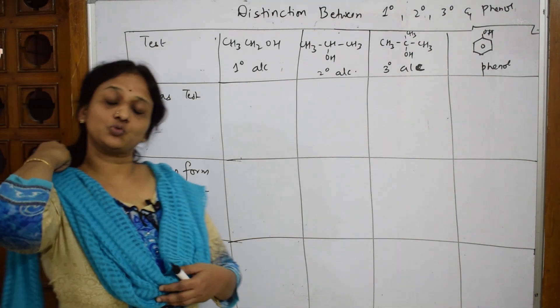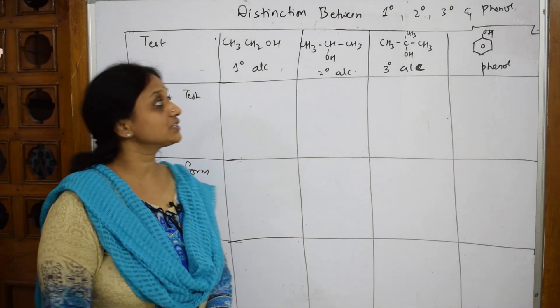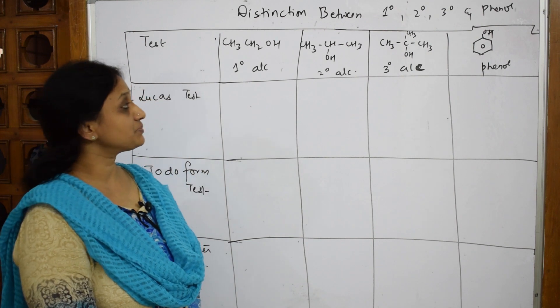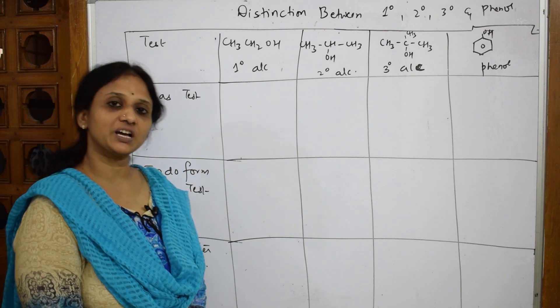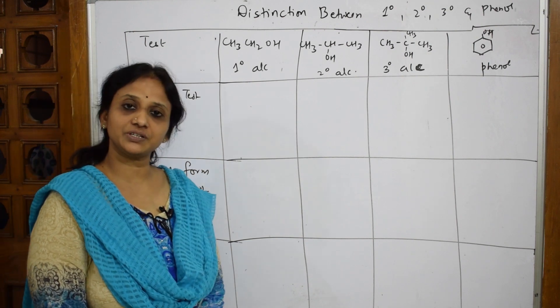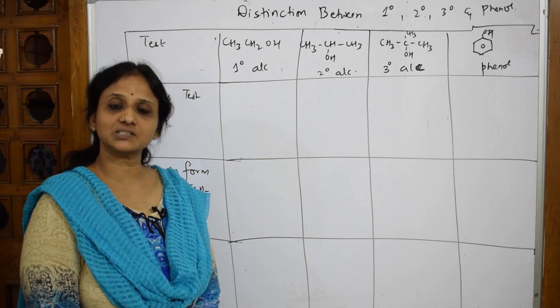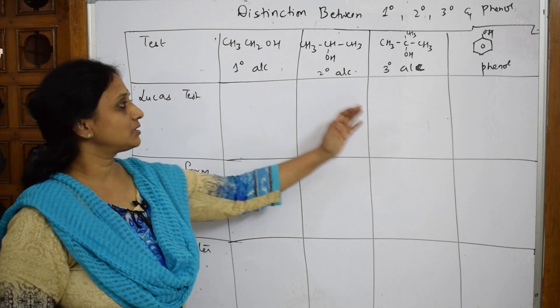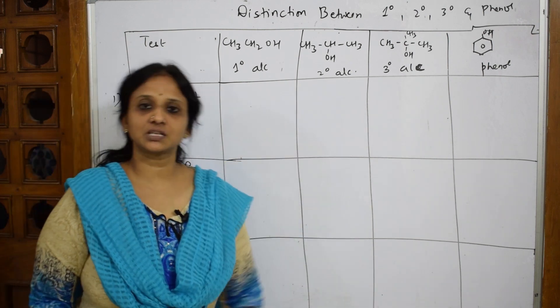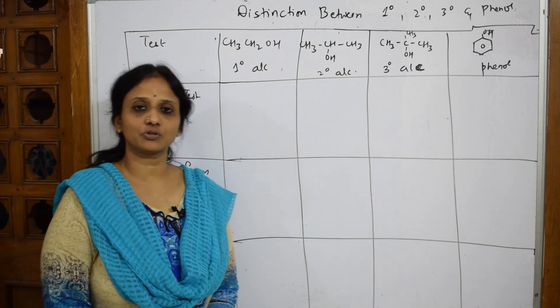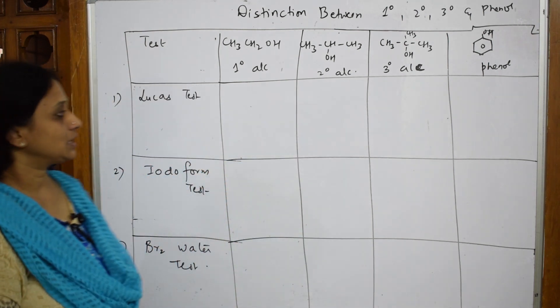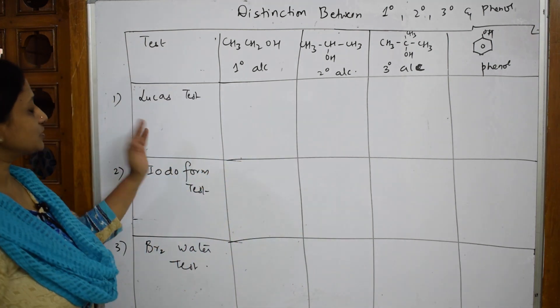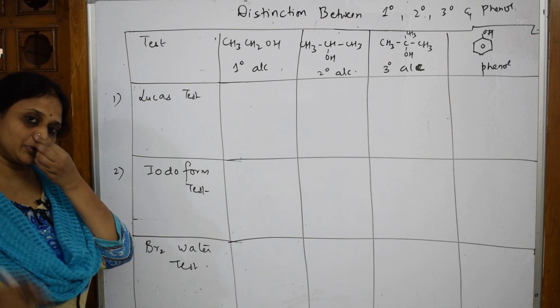Let's do one more distinguishing test. I've picked up distinguishing tests for primary, secondary, and tertiary alcohols as well as phenol. I've demarcated the board into four columns.